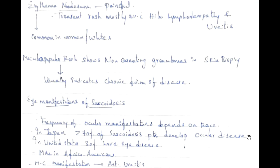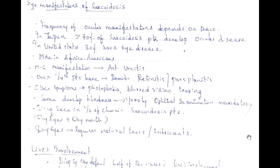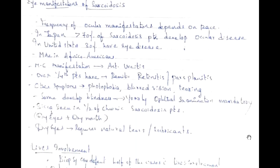Maculopapular rash indicates the chronic form of disease and shows non-caseating granulomas on skin biopsy. Regarding eye manifestations: frequency depends on race — in Japan, over 70% develop ocular disease; in the United States, 30%. Most common manifestation is anterior uveitis; over one-fourth have retinitis and pars planitis. Other symptoms include photophobia, blurred vision, and tearing; some develop blindness. Sicca syndrome (dry eyes plus dry mouth) is seen in half of chronic sarcoidosis patients.